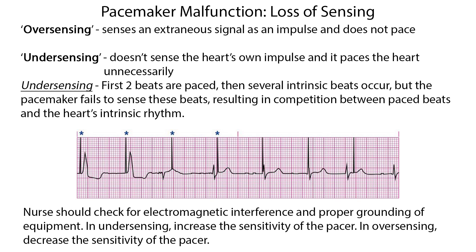In loss of sensing, the pacemaker is either over-sensing — senses an external signal as an impulse and does not pace — or it is under-sensing the heart's own impulse and paces the heart unnecessarily. In the example of under-sensing, the first two beats are paced, then several intrinsic beats occur, but the pacemaker fails to sense these beats, resulting in competition between paced beats and the heart's intrinsic rhythm. The nurse should check for electromagnetic interference and proper grounding of the equipment. In under-sensing, increase the sensitivity of the pacer. In over-sensing, decrease the sensitivity of the pacer.